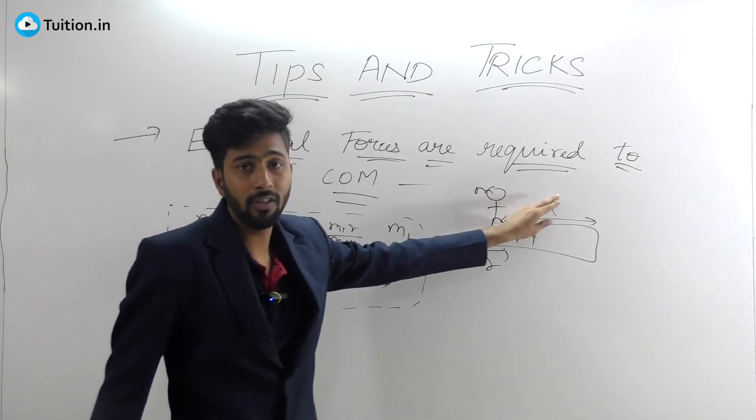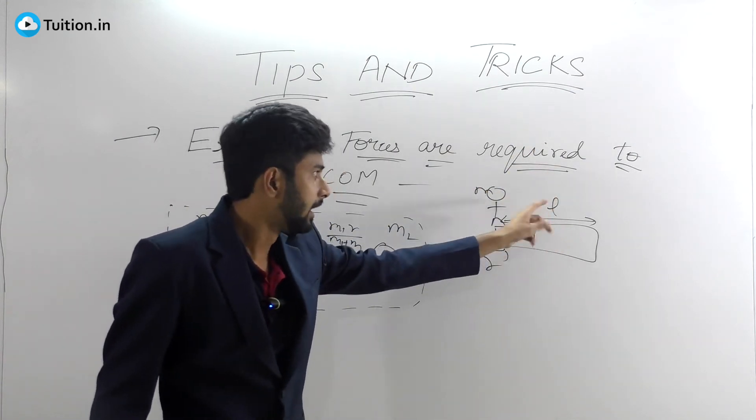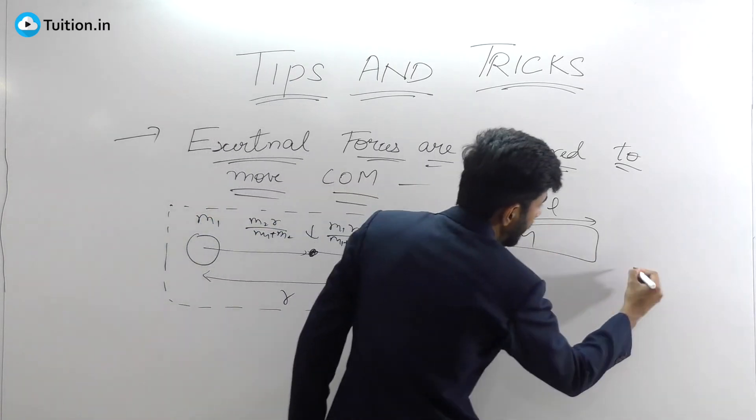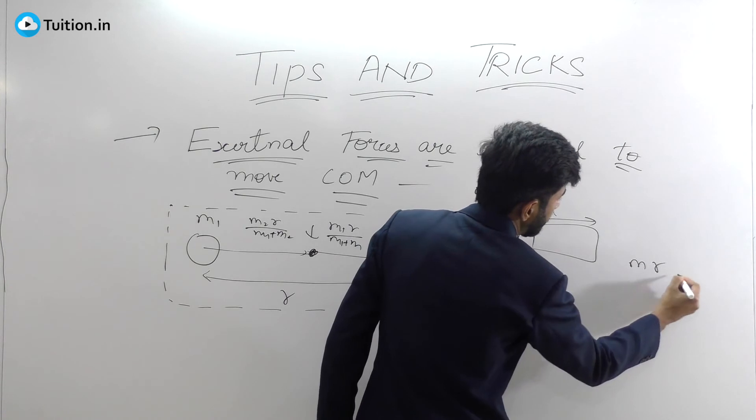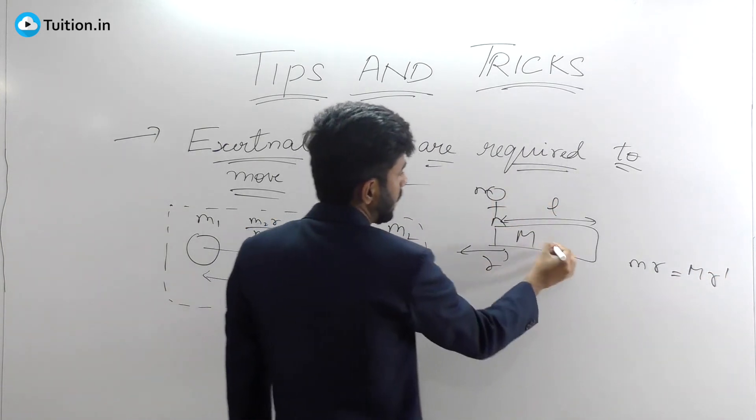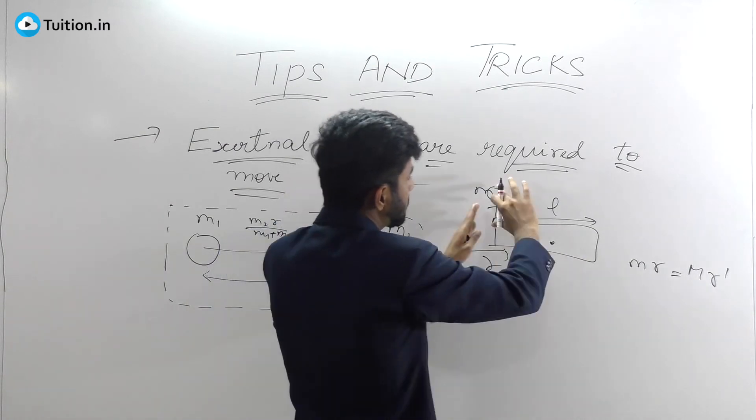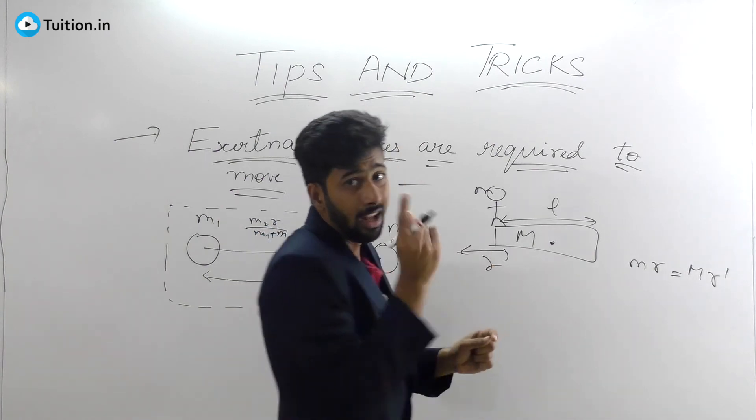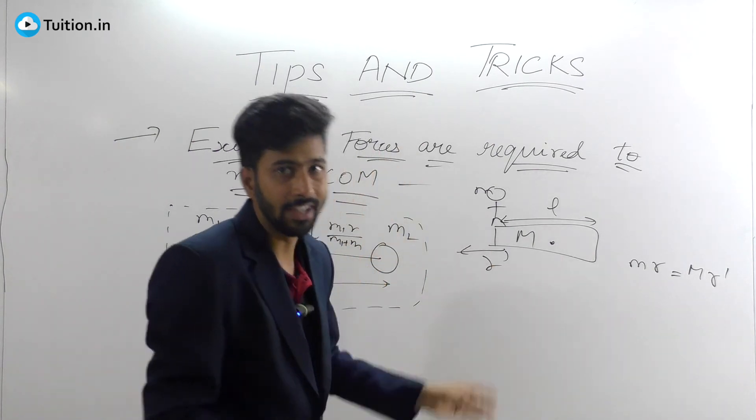Even these models are solved using the same concept. You will find the center of mass for this particular system, and then you will go to the center of mass and use this particular equation: m into r equals capital M into r dash. Let's say your center of mass was here and this particular boy moved by distance r that side and this moved by r dash. What you need to understand is center of mass can't change; it has to remain there. Using that concept, this particular thing is solved.